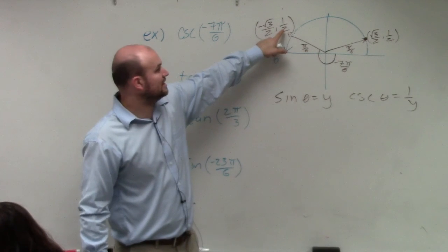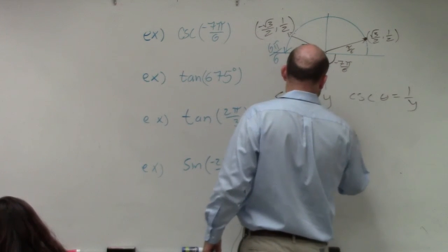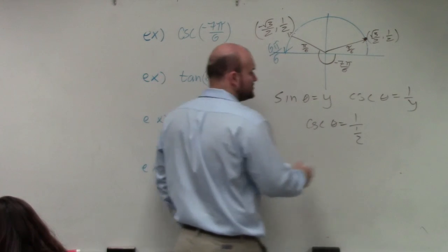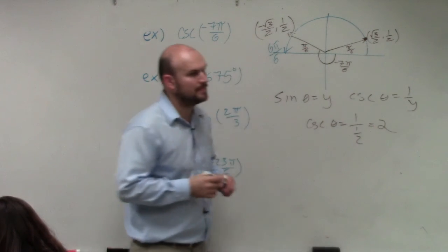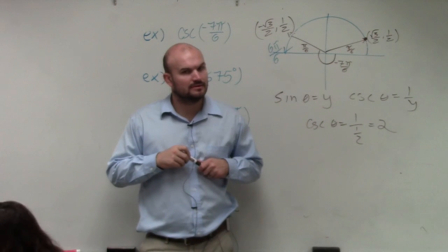So if we look at the y-coordinate, if it's 1 half, then cosecant of theta is 1 over 1 half. Multiply by the reciprocals, you get 2. That's it. Questions?